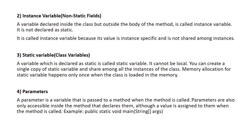We also have parameterized variables — variables that are passed to a method. Within the method, it is called a parameter. Parameters are only accessible inside the method that declares them. A variable is assigned to them when the method is called. For example, public static void main(String[] args) — the String args is a parameterized variable.